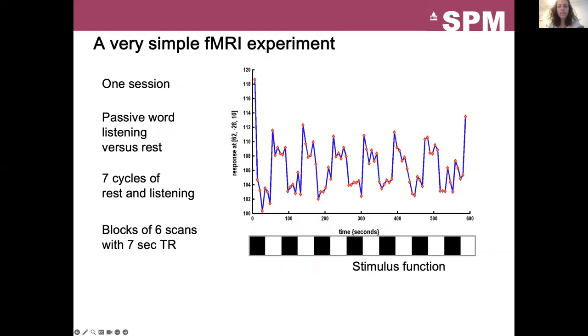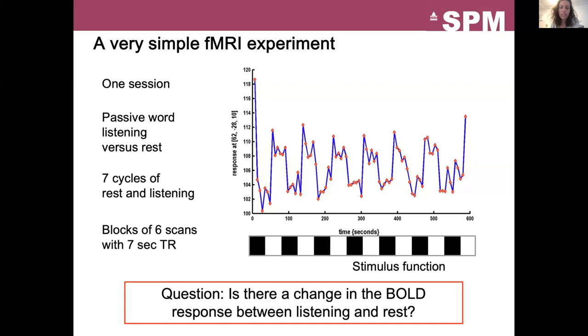As a practical example, we will use a simple fMRI experiment. During one session, the subjects alternate between periods of word listening and resting. There are 12 scans per cycle, and each scan is acquired in seven seconds. This cycle is repeated seven times. And the typical question of this kind of experiment is, is there a change in the BOLD response between listening and rest, and where does this change occur?